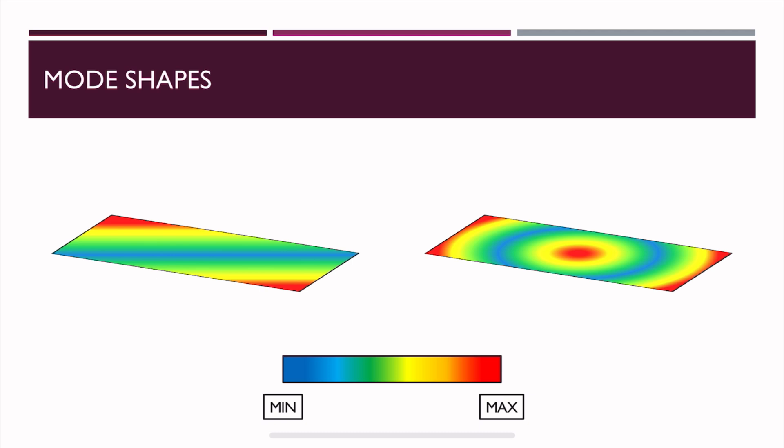The phase plot provides information about phase relationships between different frequencies. Mode shapes show how each part of the structure vibrates relative to other parts. For example, on a rectangular plate, there may be maximum amplitude at the center and edges with minimal amplitude in between, meaning those regions vibrate more relative to others. A full playlist on mode shapes is linked in the description.